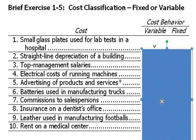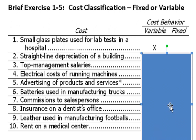Let's slide it down and see if that's right. We got the X that shows that it is. Number two: straight-line depreciation of a building. You should know that with straight-line depreciation, we record the same amount of depreciation every year without regard to the volume of activities going on in that building or business. So that represents a fixed cost and would not change.